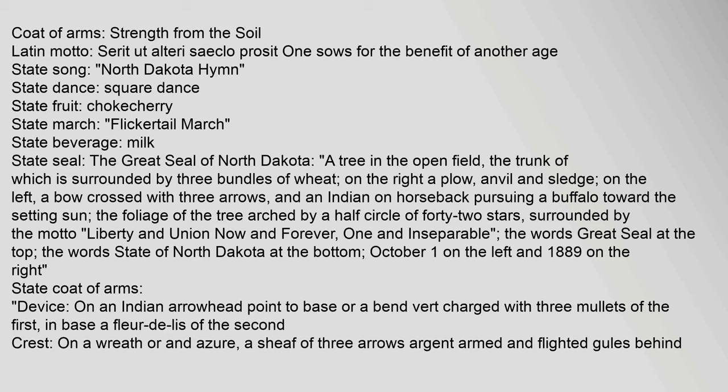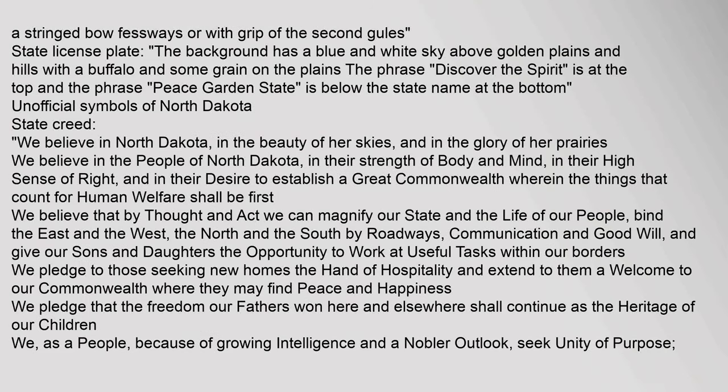State coat of arms — Device: on an Indian arrowhead point to base, or a bend vert charged with three mullets of the first; in base a fleur-de-lis of the second. Crest: on a wreath or and azure, a sheaf of three arrows argent armed and flighted, behind a string bow fessways or with grip of the second.